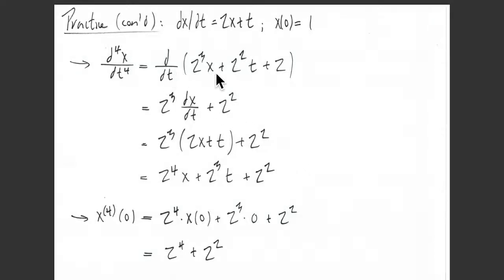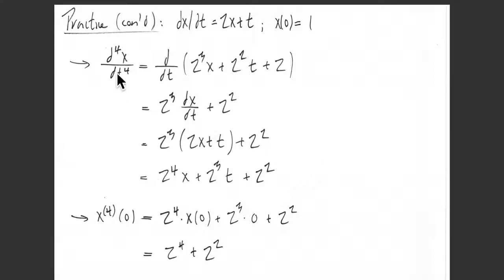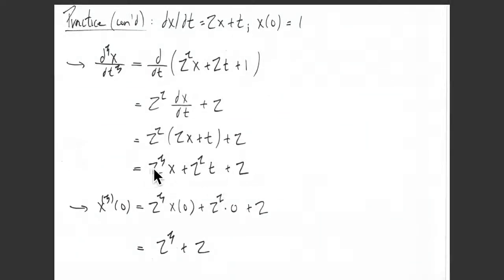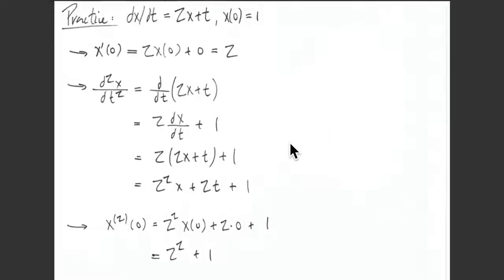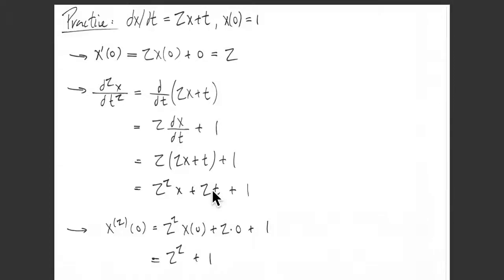Looking at the fourth derivative — the derivative of the third — we get 2³(2x + t) + 2², which simplifies to 2⁴x + 2³t + 2². Plugging in t = 0 gives 2⁴ + 2² as the fourth derivative at 0. Now we can really begin to see the pattern: the coefficients start at the order of the derivative and walk down by 1. For the fourth derivative: 2⁴x + 2³t + 2²; for the third: 2³x + 2²t + 2¹; for the second: 2²x + 2¹t + 2⁰.